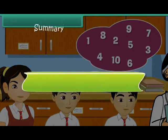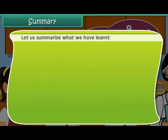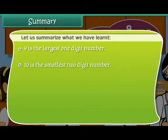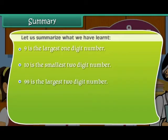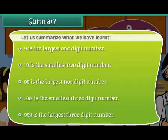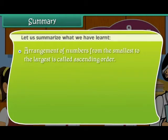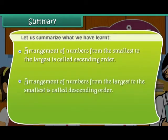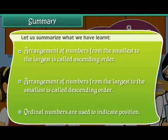Let us summarize what we have learned. Nine is the largest one-digit number. Ten is the smallest two-digit number. Ninety-nine is the largest two-digit number. Hundred is the smallest three-digit number. Nine hundred and ninety-nine is the largest three-digit number. Arrangement of numbers from the smallest to the largest is called ascending order. Arrangement from the largest to the smallest is called descending order. Ordinal numbers are used to indicate position.